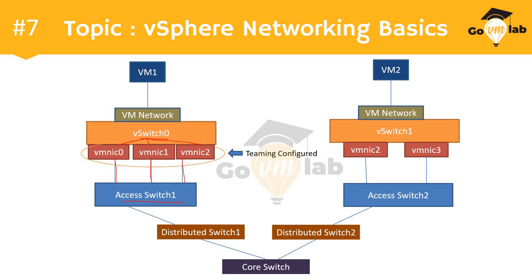In question six, the two uplinks were connected to two different switches — access switch one and access switch two. But in this scenario, all three uplinks — VMNIC zero, VMNIC one, and VMNIC two — are connected to a common access switch one. Access switch one is connected to distribution switch one, which is connected to the core switch. That's how the left side looks. On the right side, VM two is connected to the VM network port group of virtual switch one, which has two uplinks — VMNIC two and VMNIC three — both connected to access switch two, which connects to distribution switch two, which connects to the core switch.